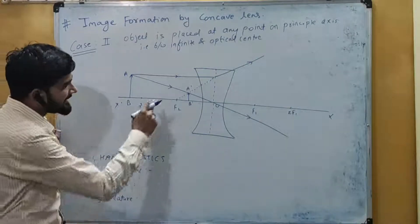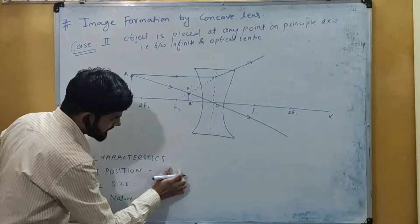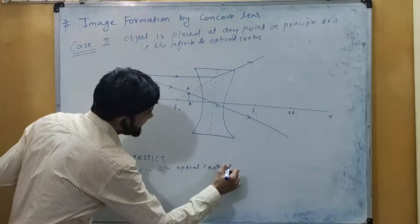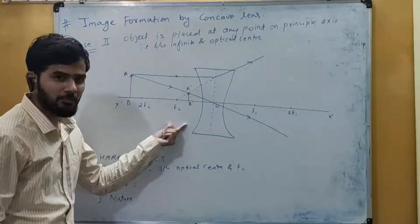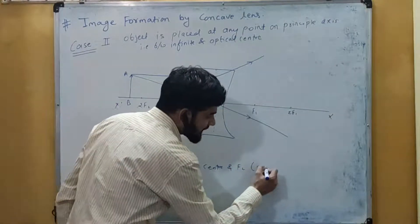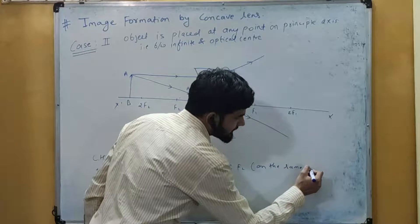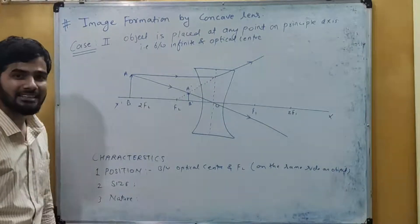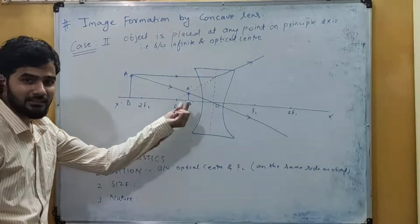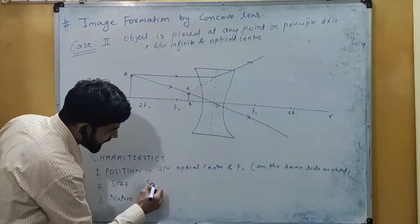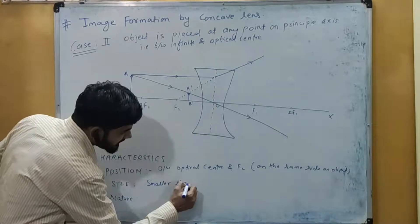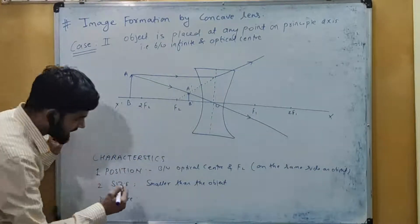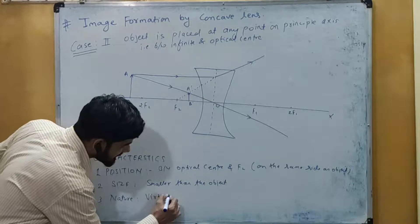Now, characteristics of the image formed in Case 2. First, the position: the image is formed between the optical center and F2 (the second principal focus), on the same side as the object. Second, the size: the image is smaller than the object. Third, the nature: since the image forms on the same side, it is virtual and erect.